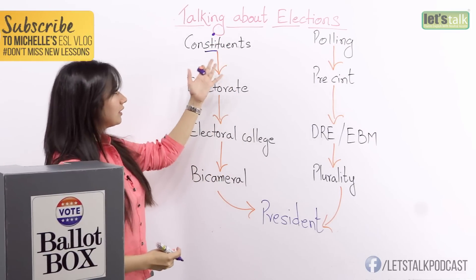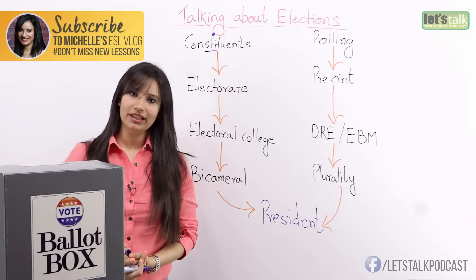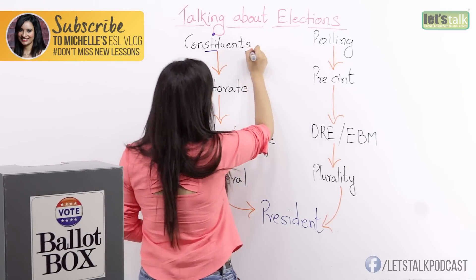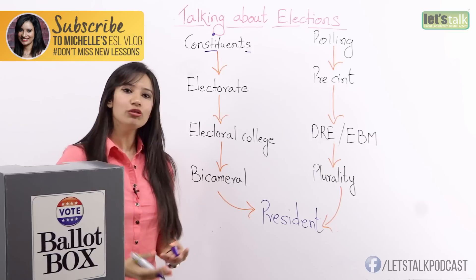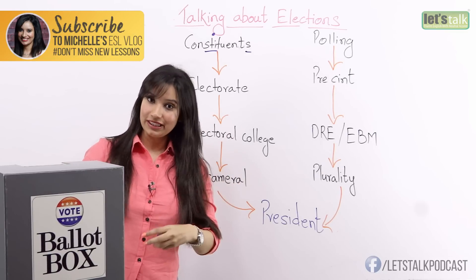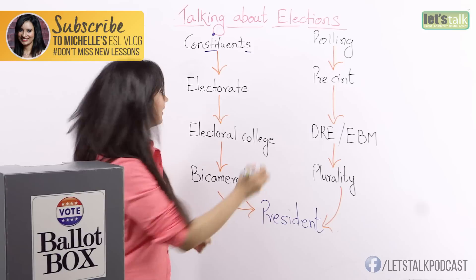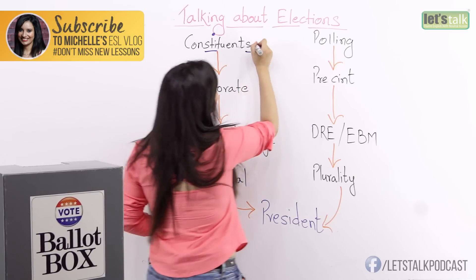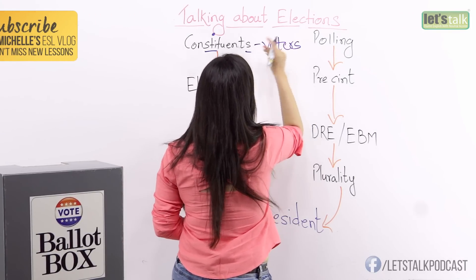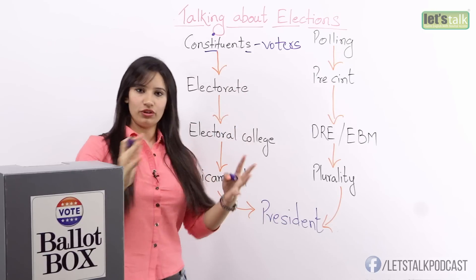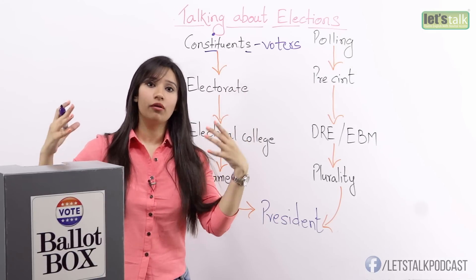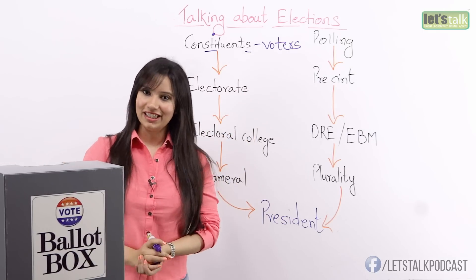So who are constituents? As you can see, it's a countable noun because we have the letter S, so you can count the number of constituents, who are actually the voters — people who vote. Constituents are the voters, the overall number of people who are voting in a particular election.